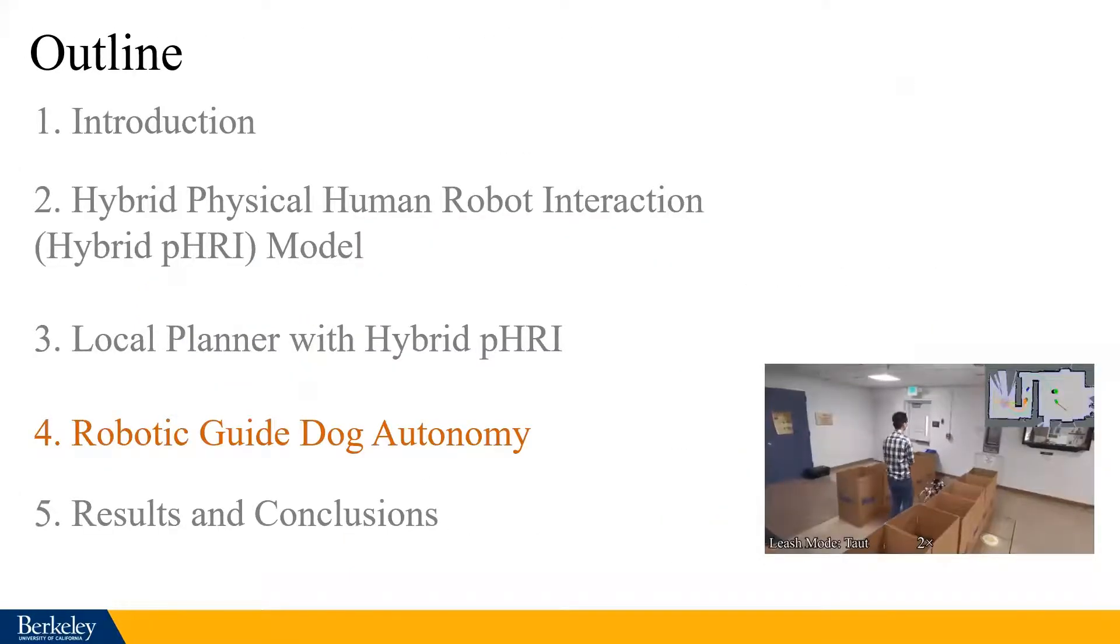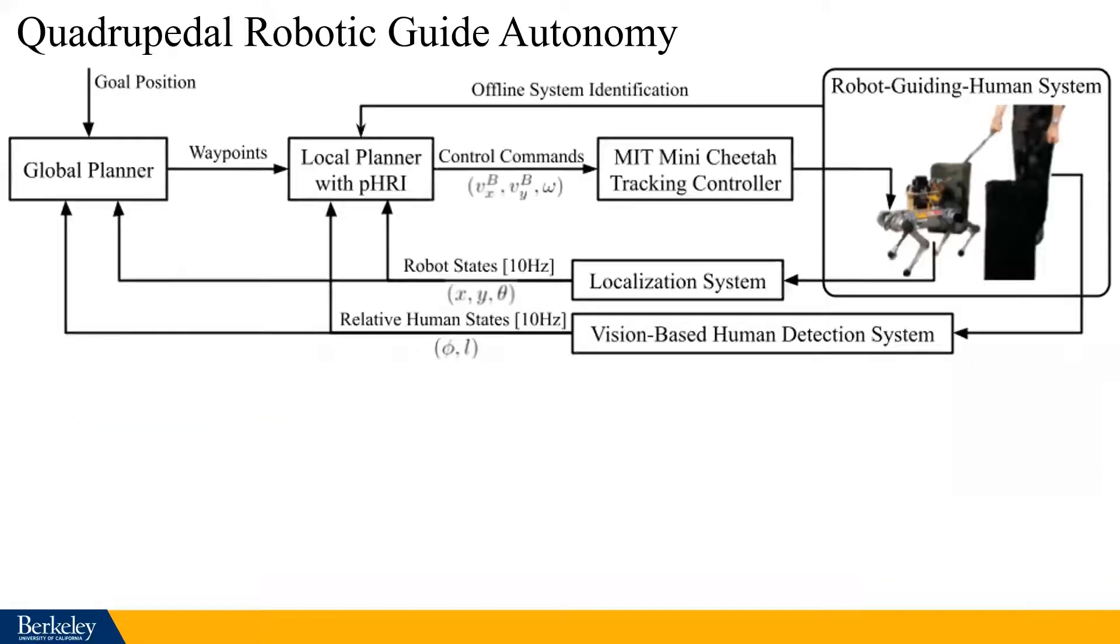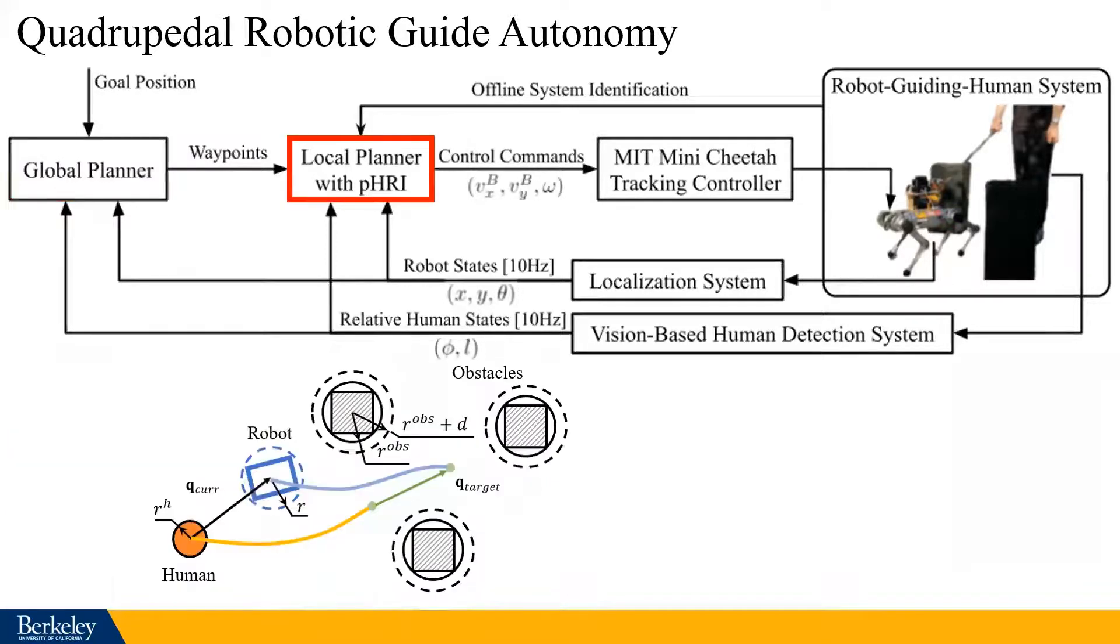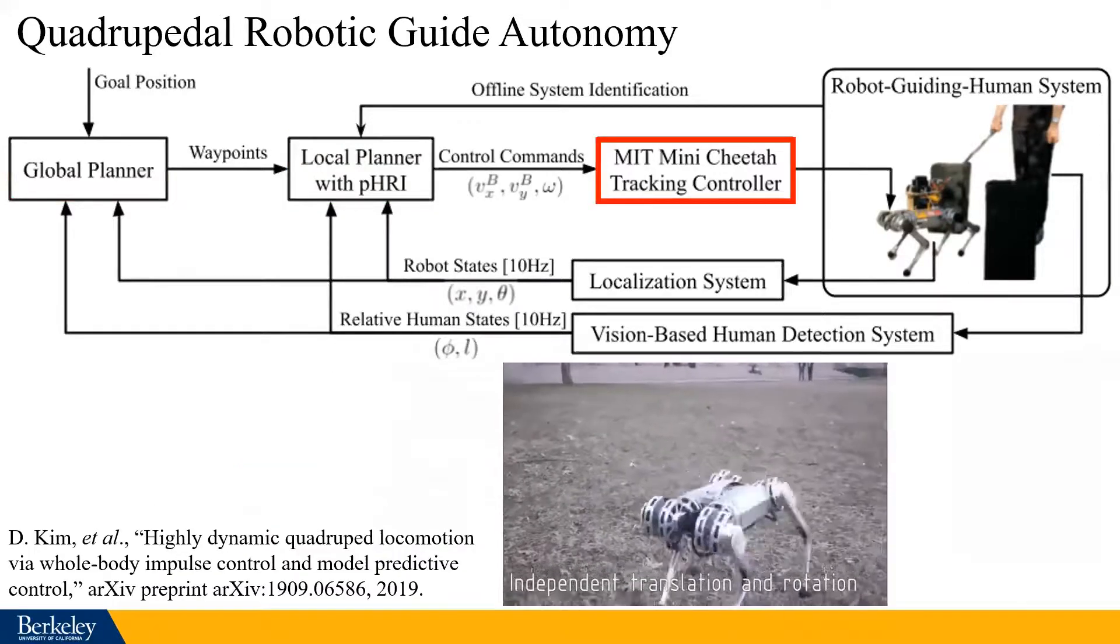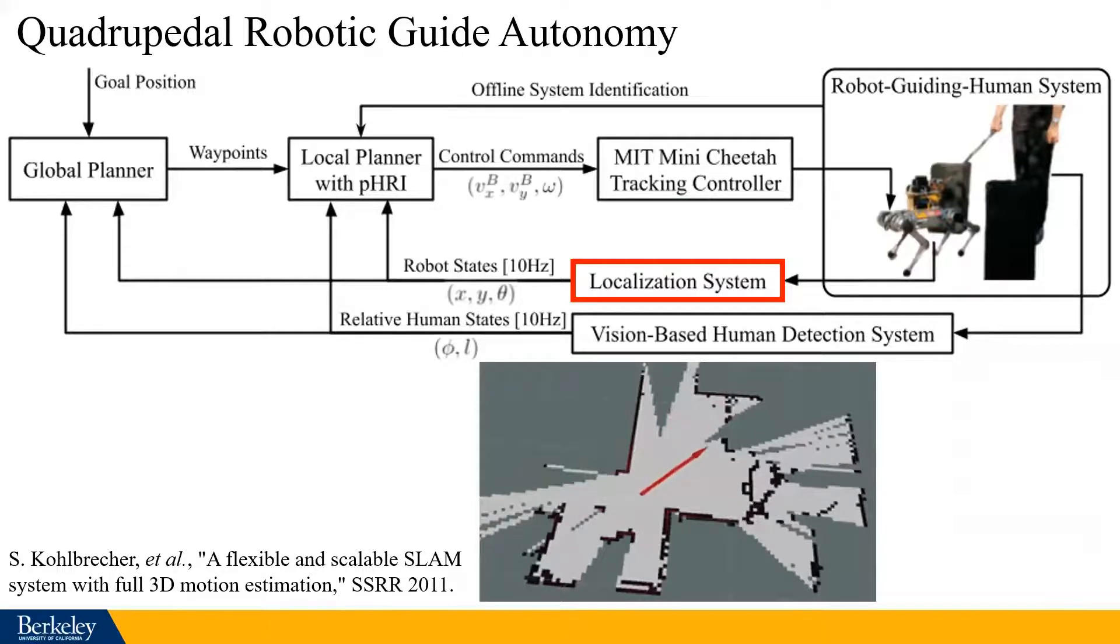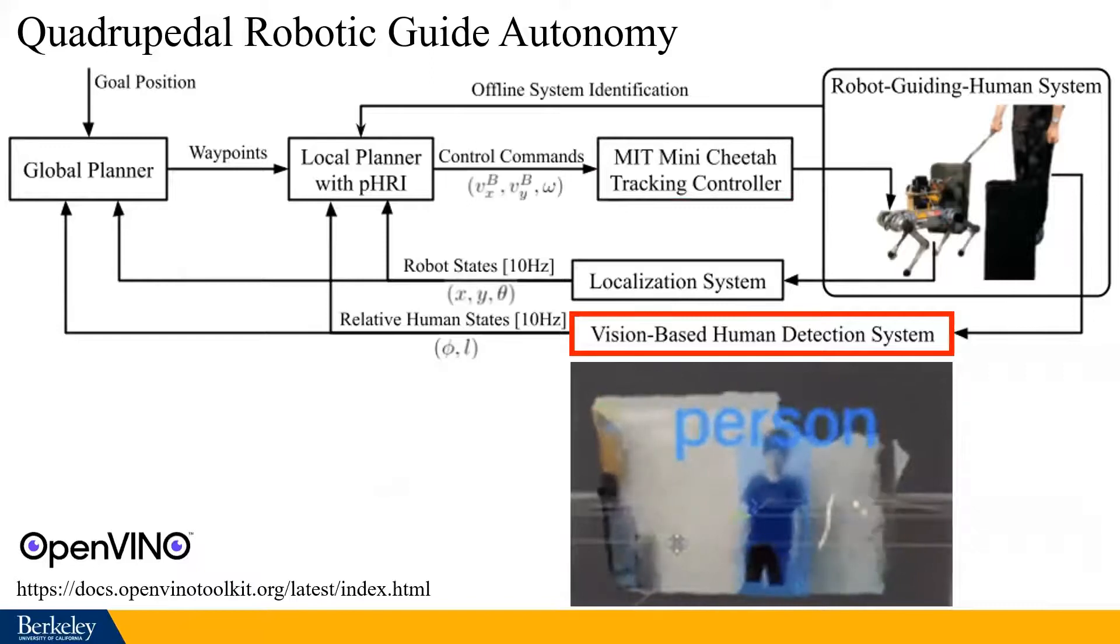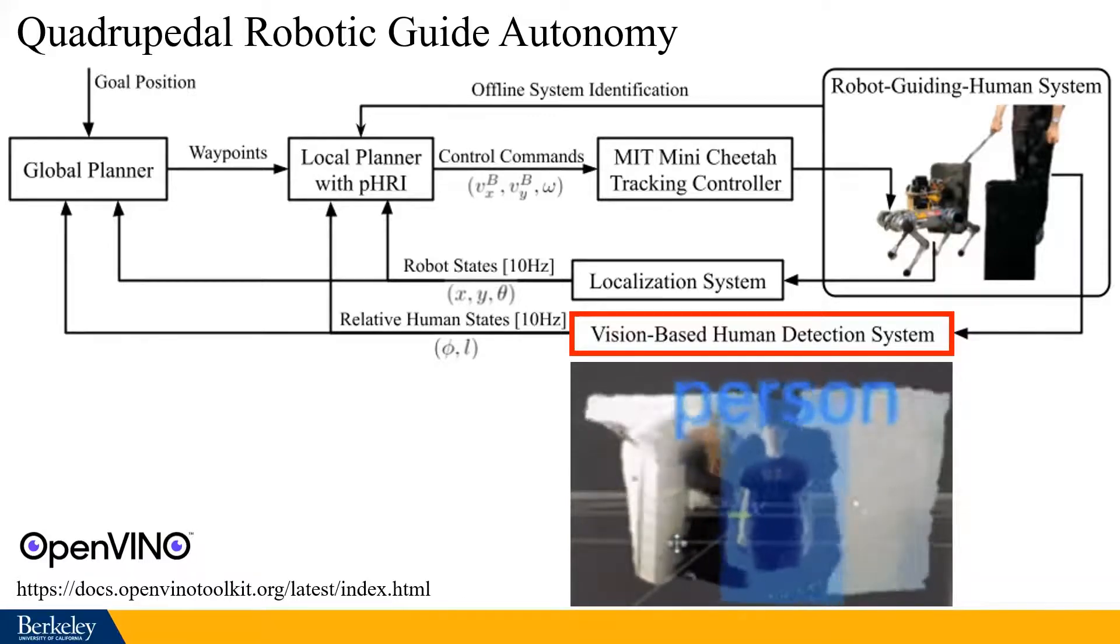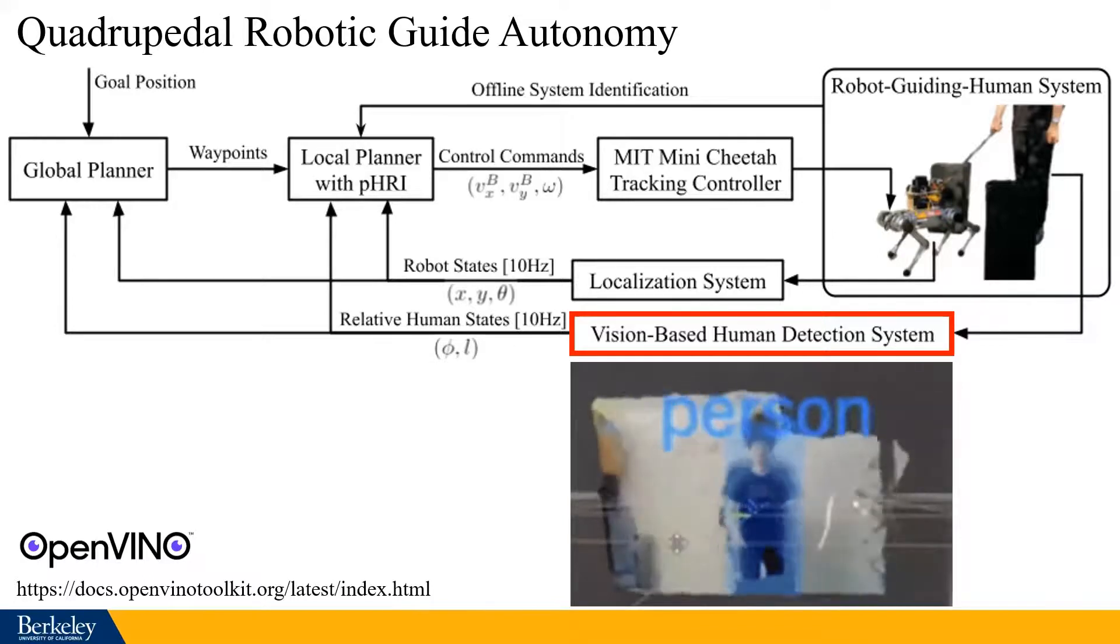This local planner can be embedded into an end-to-end robotic guide-dog framework. This is the framework we developed for this work. First, after being given a goal location, we use A star serving as a global planner to quickly find the path of the configuration for the entire system. It will output the next waypoint to the local planner to check. This local planner is what we just introduced using the hybrid physical HRI model, and we output the virtual inputs to the system, which are the desired robot walking and turning velocity. These commands are sent to a pre-built velocity tracking controller for the mini cheetah. Online, we use a 2D lidar to detect obstacles and to do localizations. We have an RGBD camera to detect the human being led, and this camera is able to move by a 2D gimbal to always keep the person in the view. This human following system will update the human position in real-time.